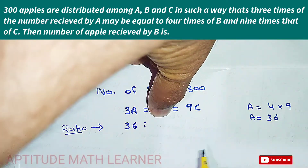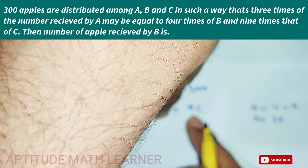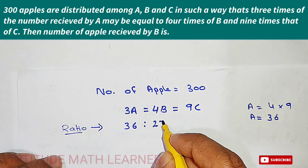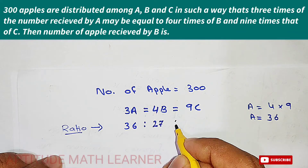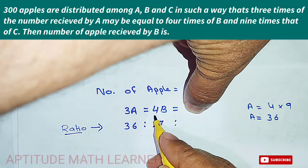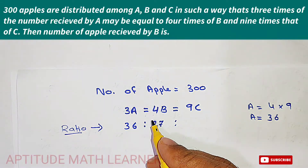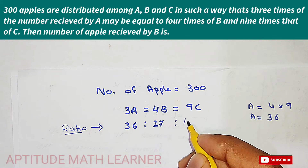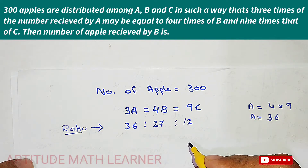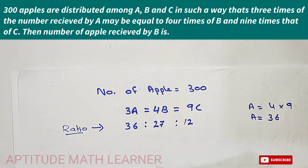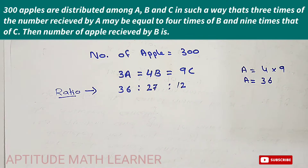For B, we hide that portion and get 3 multiplied by 9, which is 27. For C, we hide that portion and get 3 multiplied by 4, which is 12. So we have the ratios for A, B, and C as 36, 27, and 12.